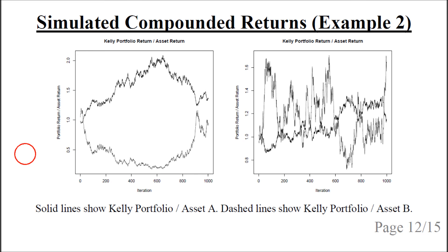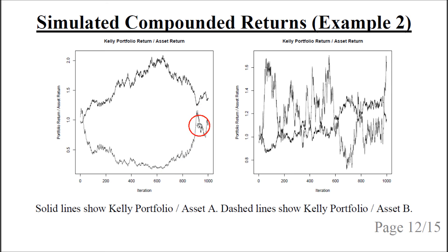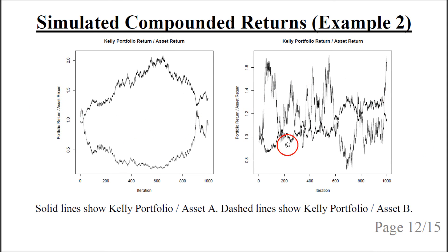Consider two more simulations. In the first, the solid line shows Kelly divided by asset A — at first the Kelly portfolio performs better, then worse than asset A. The dashed line shows Kelly divided by asset B — at first the Kelly portfolio performs much worse than asset B, but eventually recovers. The last simulation occurs only rarely and is very erratic. Mostly we get the earlier patterns, and only rarely the most erratic outcome.